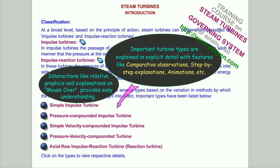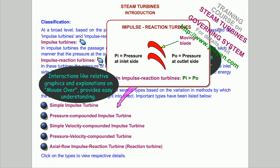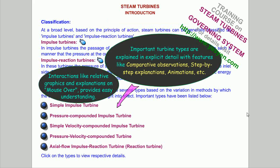Important turbine types are explained in explicit detail, with features like comparative observations, step-by-step explanations, animations, etc. Interactions like relative graphics and explanations on mouse-over provide easy understanding.